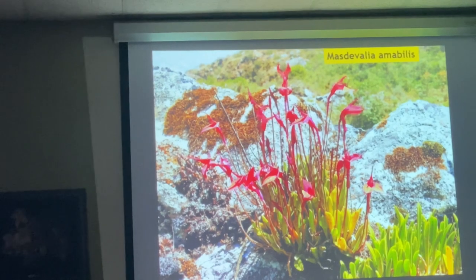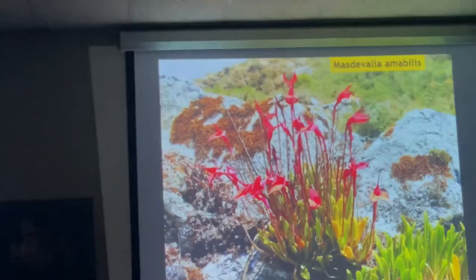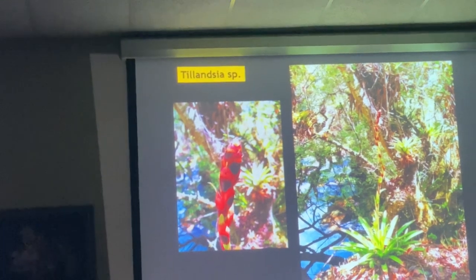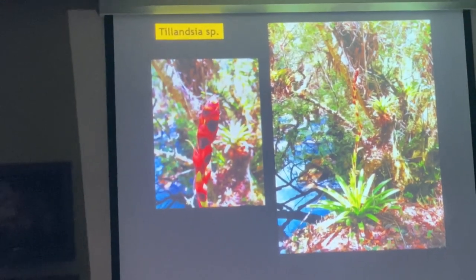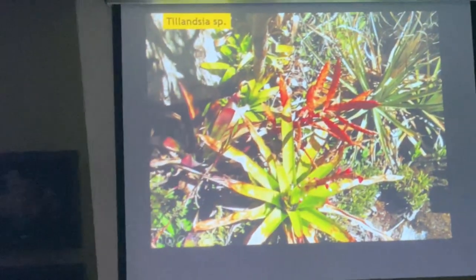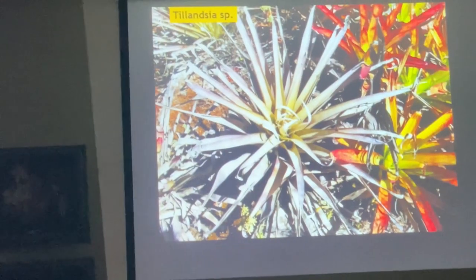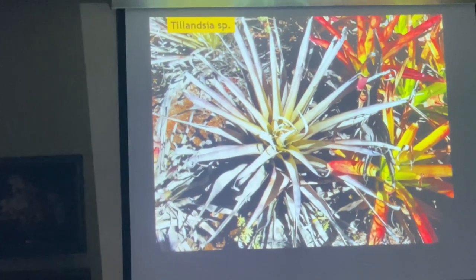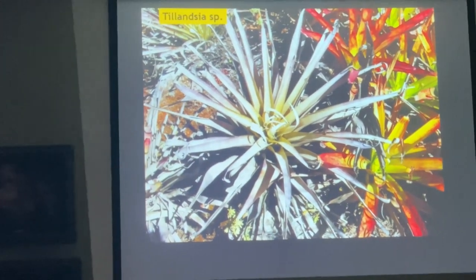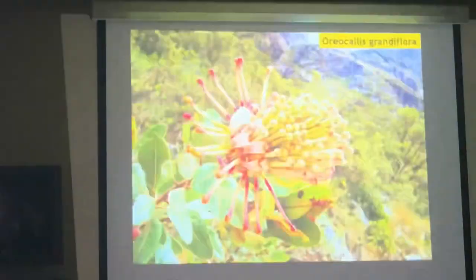Quite a few orchids grow here — this is a Masdevallia, which was spectacular, the amount of flowers it had. This is a Tillandsia I've always tried to identify but haven't been able to. It's fairly common but only grows right next to the water — there's a little stream, and they only grow next to it. I just recently, literally last week, found the name for it. It has a beautiful red bract on the spike, and I've never seen it with flowers, so I wasn't able to identify it.